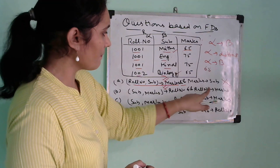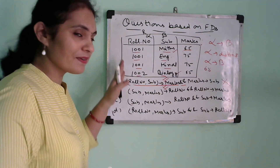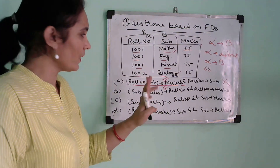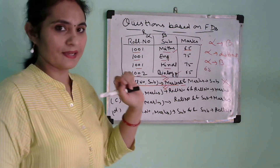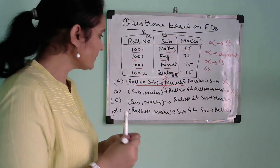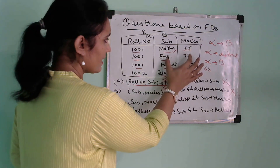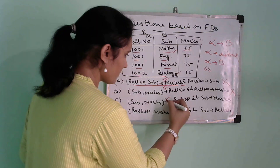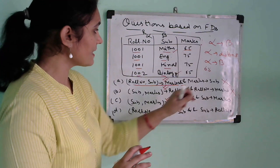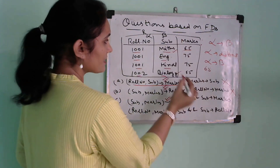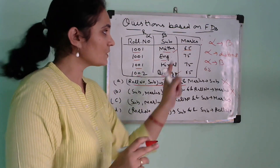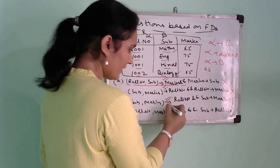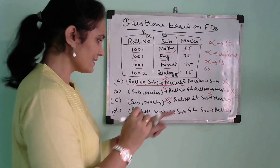Checking roll number to marks: roll numbers 1001 repeat, and marks repeat too. 1001 maps to 65 once and 75 another time — different beta values, so this FD is not valid. Checking subject to marks: subject values are all unique, so Trick 1 applies. This functional dependency is valid. Option C appears correct.